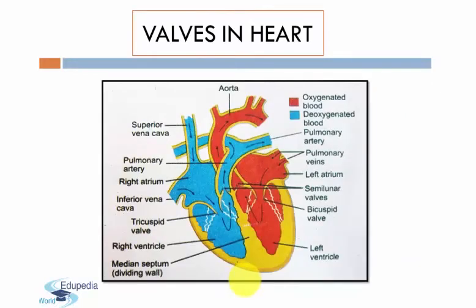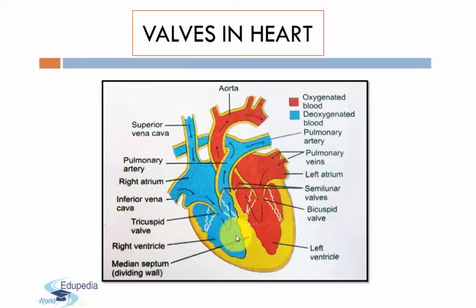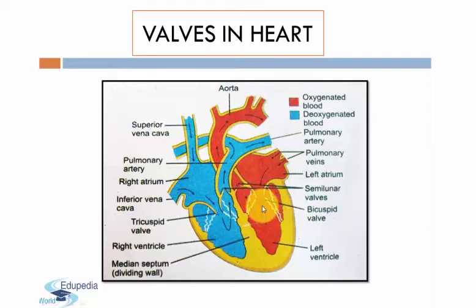There are four types of valves in the heart. The first valve is the tricuspid valve, which guards the opening between the right auricle and the right ventricle. The second valve is the bicuspid valve, which guards the opening between the left auricle and the left ventricle.